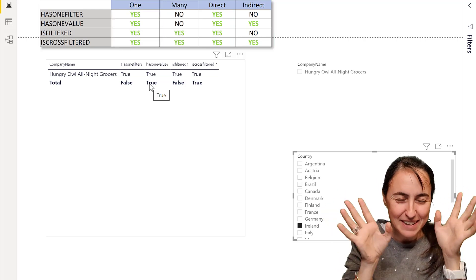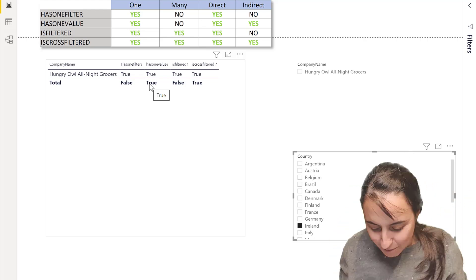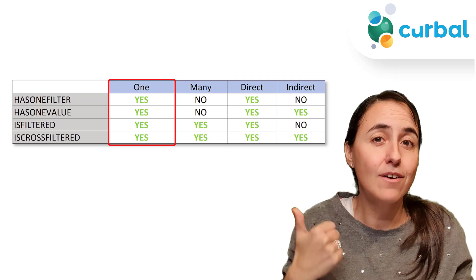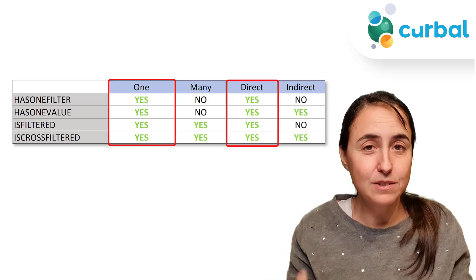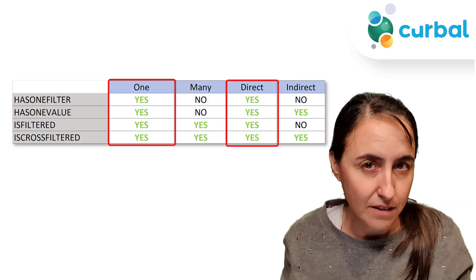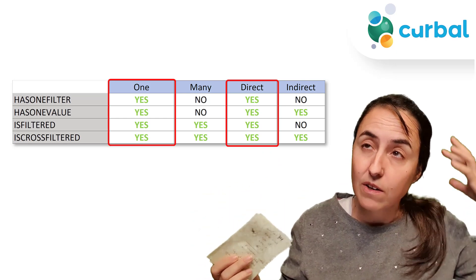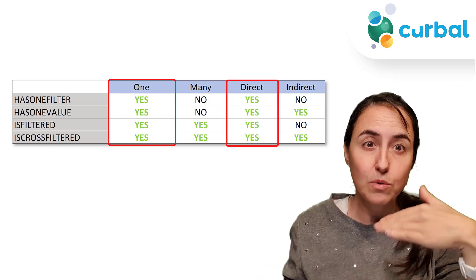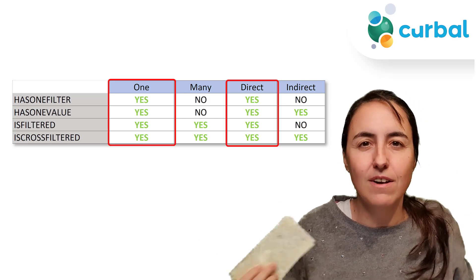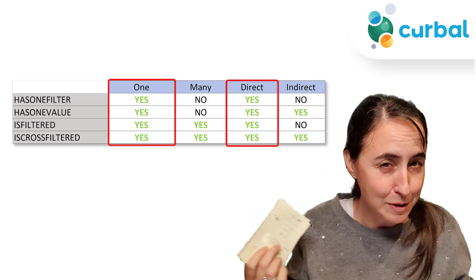You have to think about it to understand how it works. All of them allow for one value and all allow for direct filters. The difference starts when you talk about multiple values and indirect columns. That's when you start to see differences, especially in a grand total where you don't really see the table behind the calculation — you might not realize there are multiple values and get unexpected results.